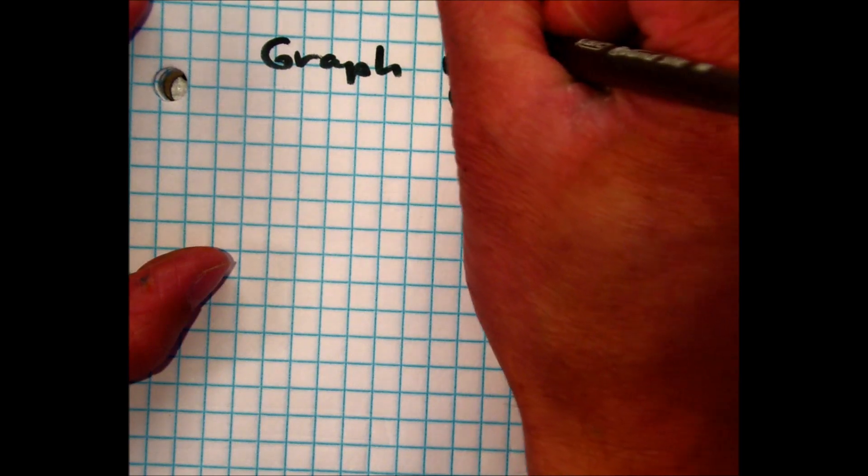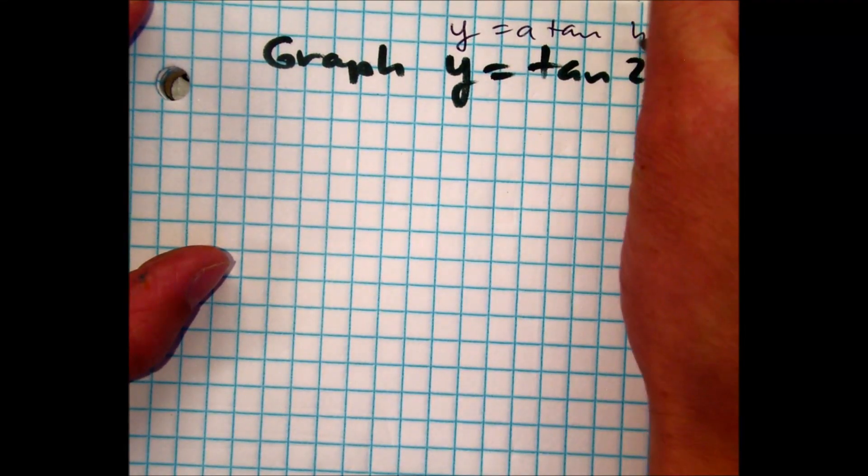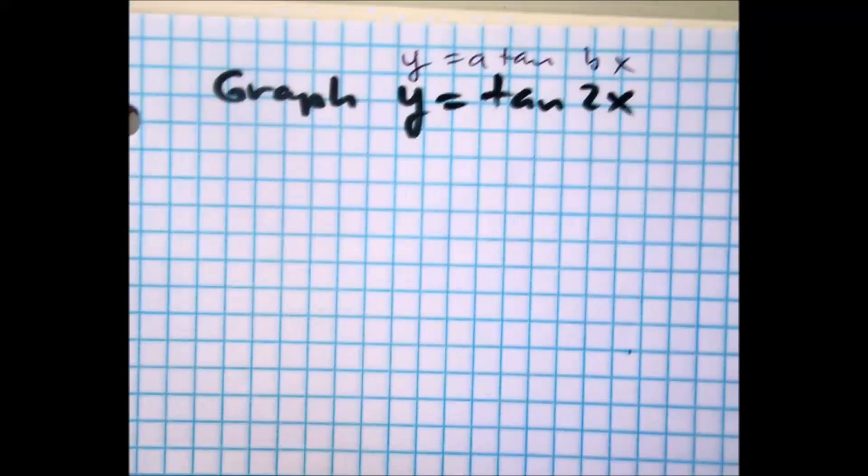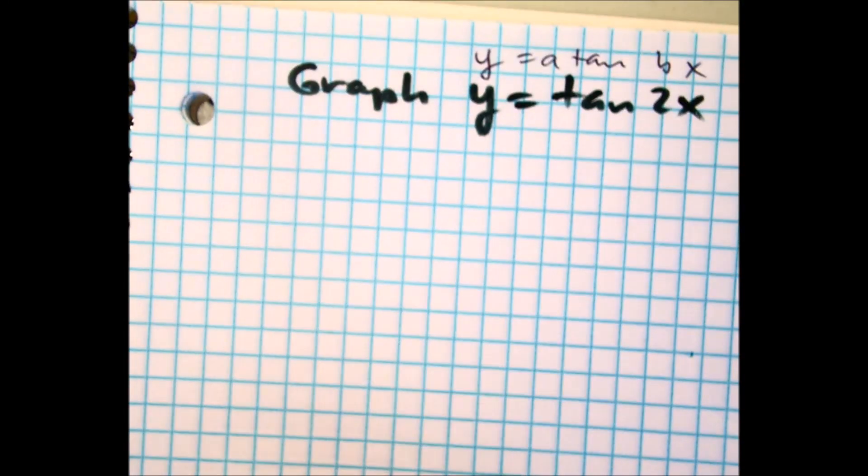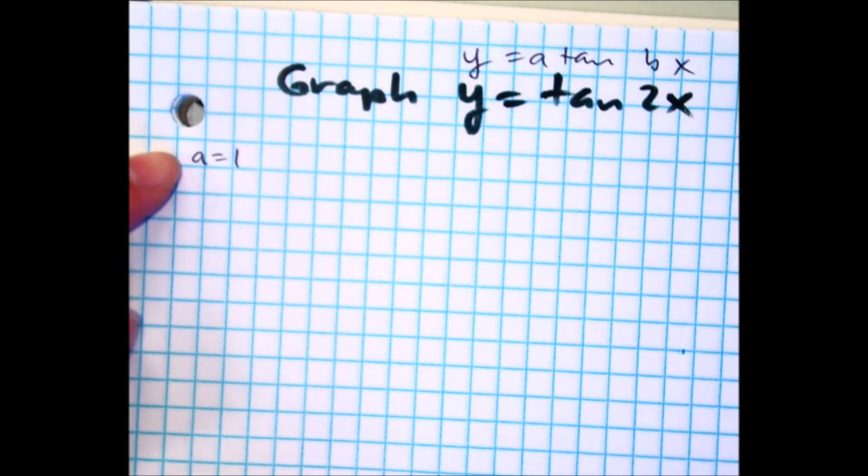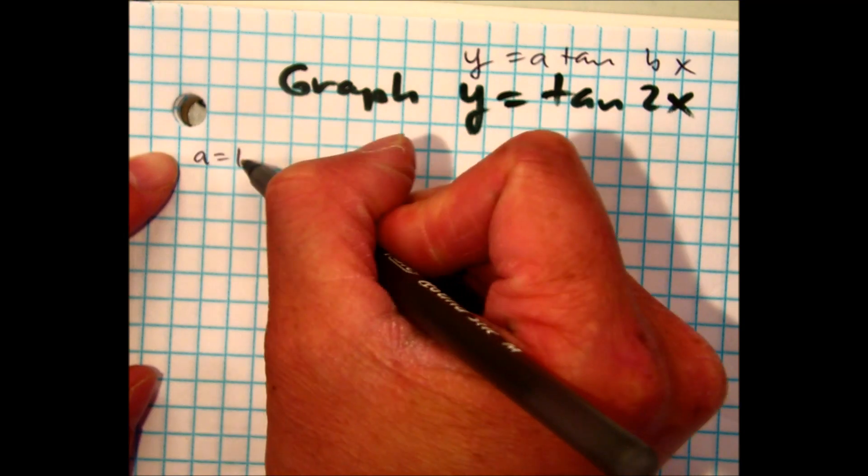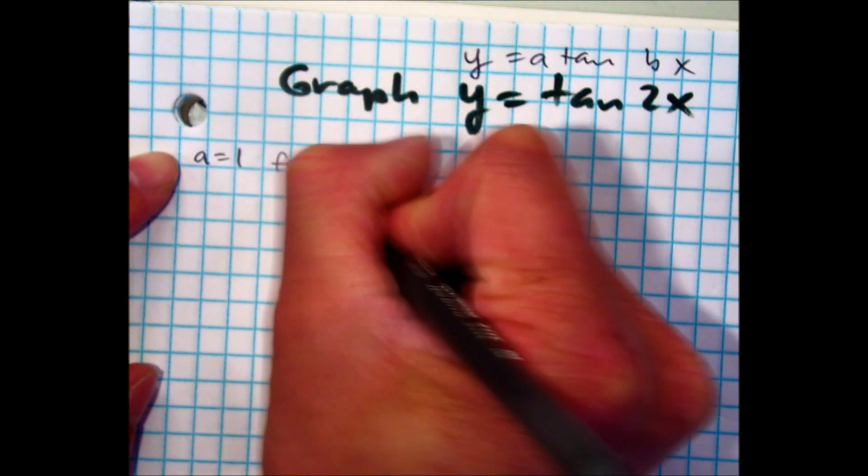So I can rewrite above or below a tangent bx. Class, what's our a value? One. Remember, for tangent and cotangent, this is not really an amplitude of 1. So you can call it a fake amplitude.